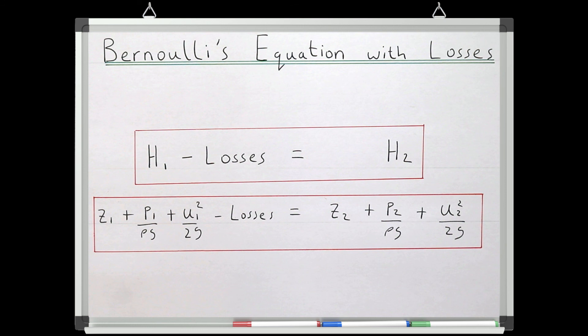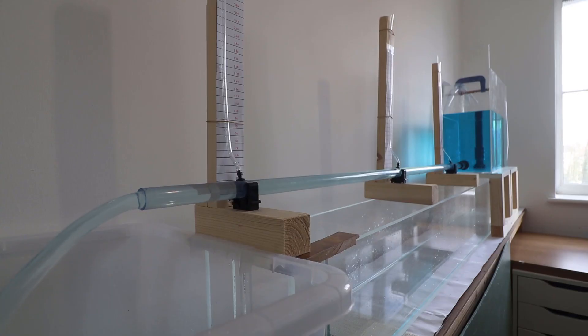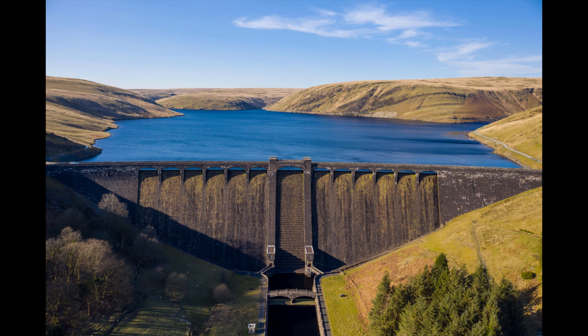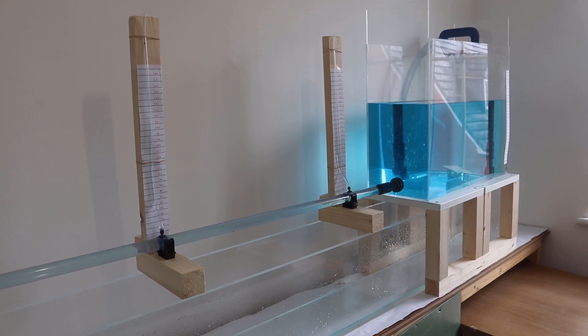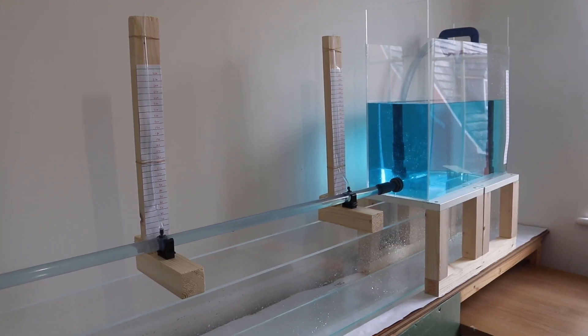So in this lesson, we've learned how to apply Bernoulli's equation between two points in the system, where we're accounting for losses. In the first video we looked at a model pipe that was 1.25 meters long, and in this video we've looked at a much larger, longer real system with a pipe length of 117,000 meters. But in all of this lesson, we've been looking at gravity-fed systems, where the system is driven by the difference in elevation between the water surface in the reservoir and the pipe's outlet.